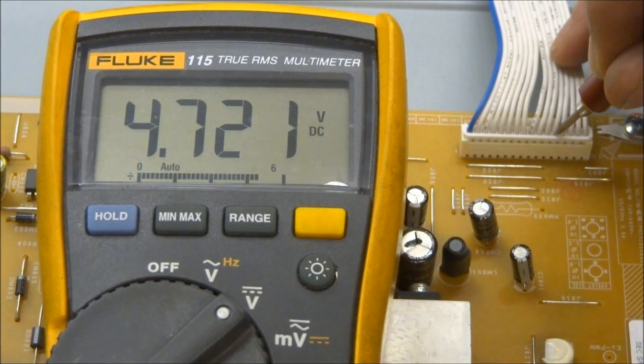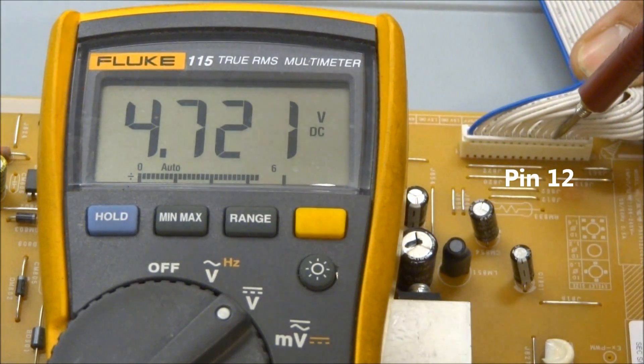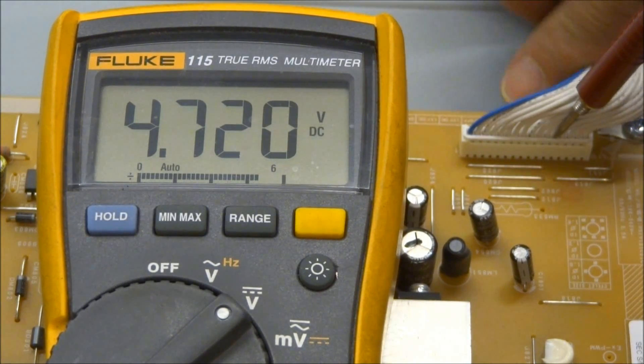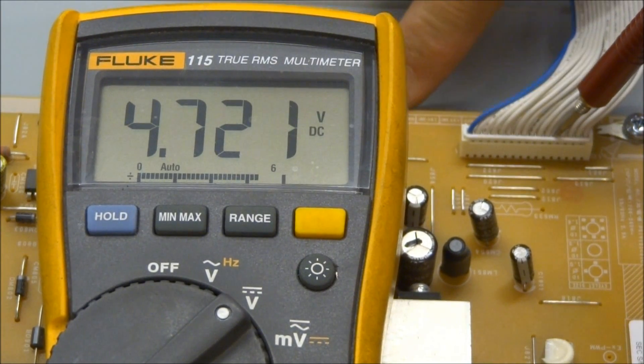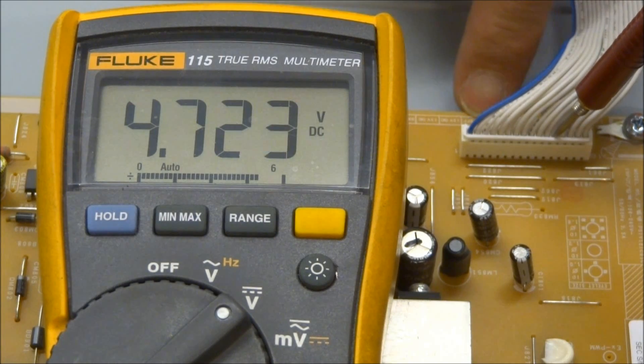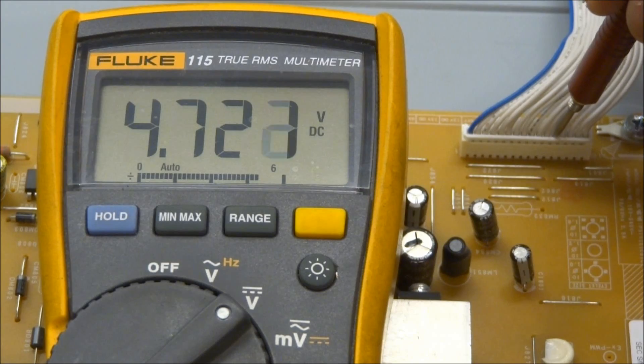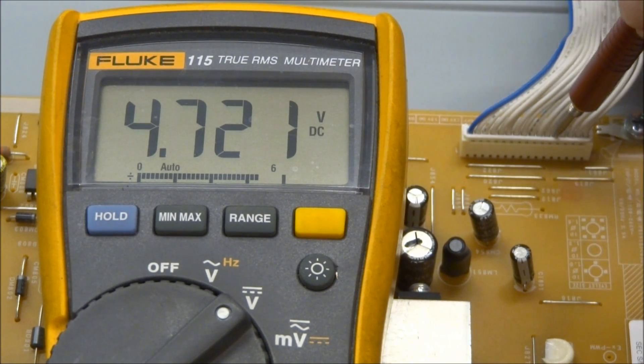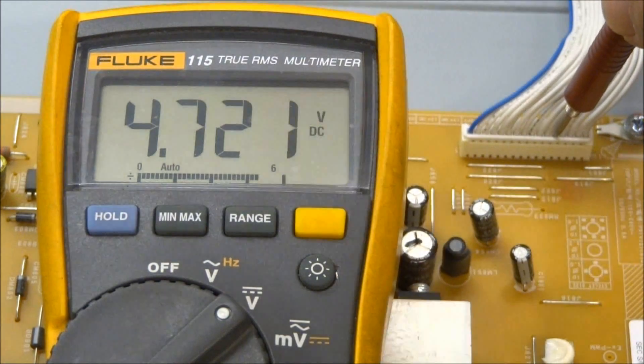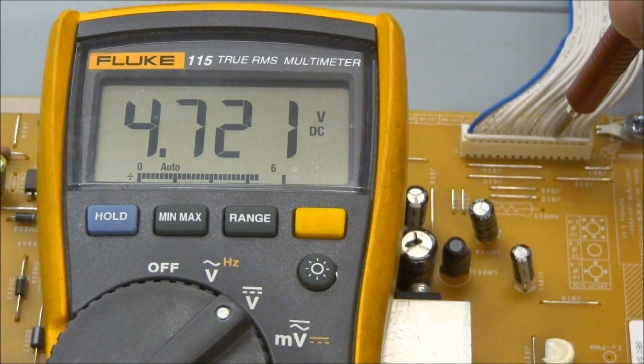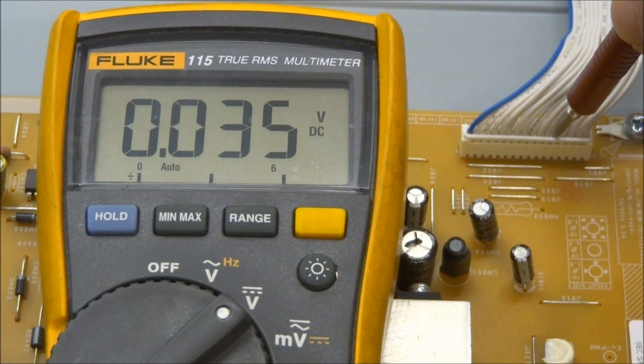Now, the one after that is the backlight inverter on-off. I don't know if the camera might block it or not, but actually, the board is labeled right here. You can just barely see it right there. The next one is the inverter on-off, 4.7 volts when the inverter is on, so let me shut the set off. It goes down to zero as soon as the inverter turns off.